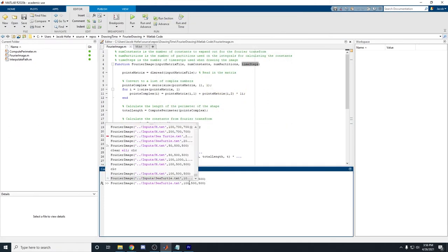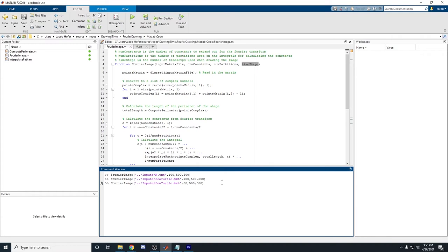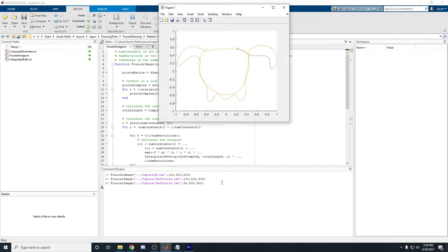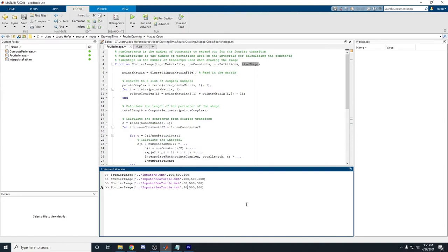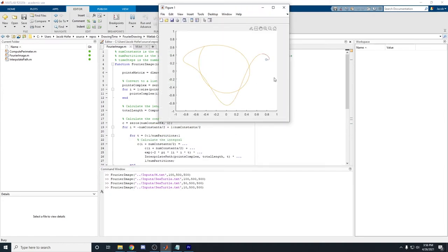Now there's some fun things that we can do with this. We can decrease the number of constants down to something like 50, and we're not going to get nearly as accurate of a result. And if we go too low, say 10, we're hardly going to get anything that resembles our sea turtle.